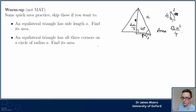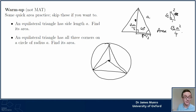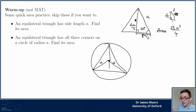Next question: now instead of the side length of the equilateral triangle, it's a circle of radius a. I draw something like this and say: the radius is a. So now I've got a triangle that looks like this, and I drop a perpendicular again.